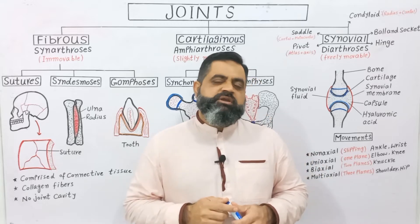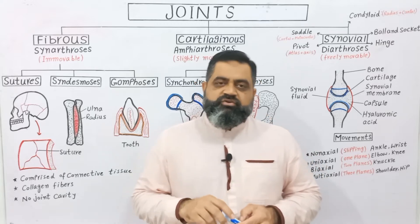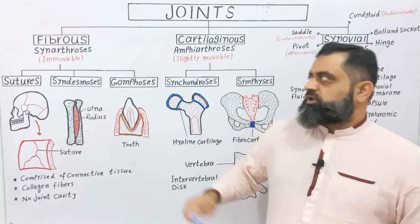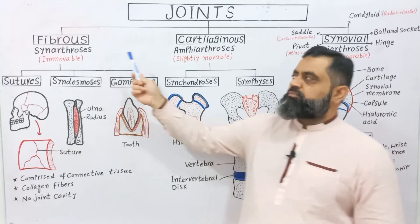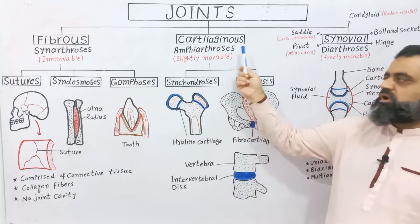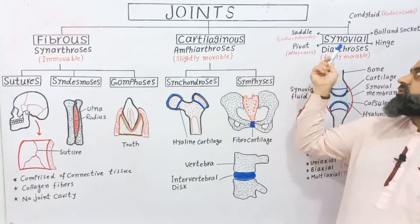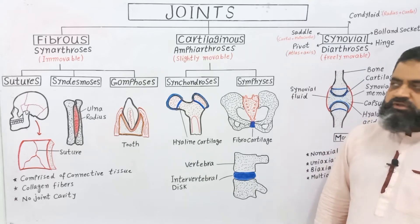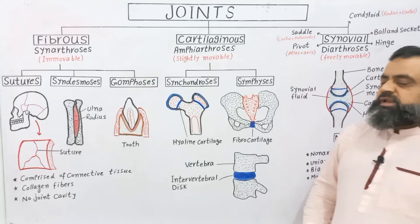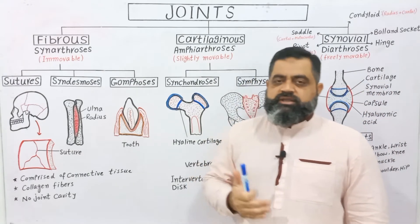Joints can be classified into three major categories: 1. Fibrous joints, 2. Cartilaginous joints, 3. Synovial joints. Let's discuss them in detail.